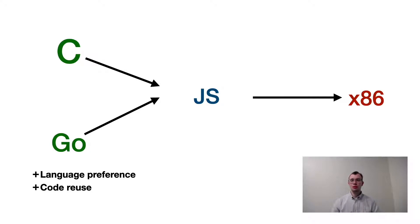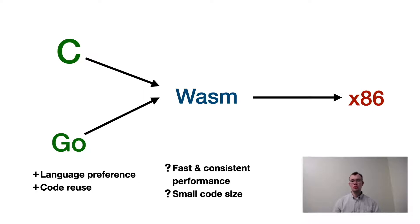This enabled web developers to create web apps in the language of their choice and enabled further code reuse. However, the performance of JavaScript was a bit unpredictable, so WebAssembly was introduced as an alternative compilation target. Since then, WebAssembly has been adopted by all the major web browsers. The promise of WebAssembly is to offer fast and consistent performance, as well as a small code-size footprint.